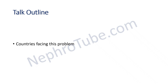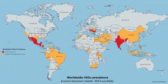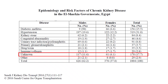Many countries all over the world are facing this problem. It is found in Meso-American areas and in multiple countries across Africa. Evidence of CKDU in Egypt includes a study done in Sharqia governorate, where about 17–18% of CKD cases were of unknown etiology, likely attributable to CKDU.